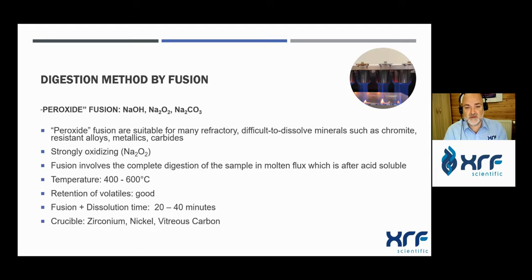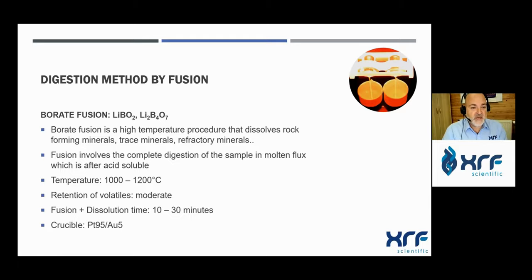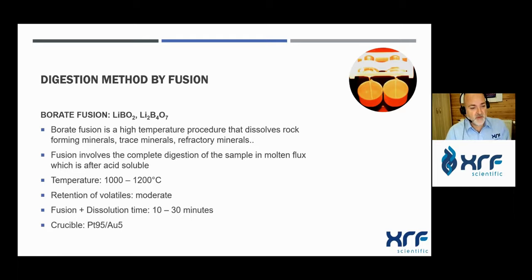The second type is borate fusion, made with lithium metaborate, lithium tetraborate, or a mix of both. This is done at higher temperatures and is used for minerals, refractories, rocks, and cement. It involves complete digestion of the sample in the molten flux, and the product obtained is acid soluble with diluted acid. Temperature range is between 1000 and 1200°C, retention of volatiles is moderate due to the higher temperature, and total fusion plus dissolution time is about 10 to 30 minutes. Crucibles are made of platinum-gold.